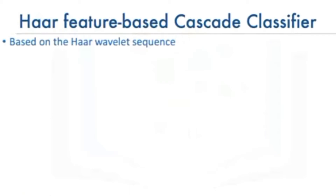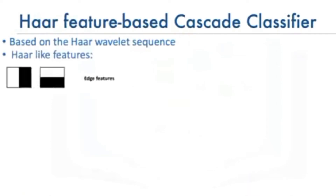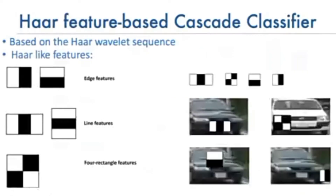After millions of training images are fed into the system, the classifier begins by extracting features from each image. HAR wavelets are convolution kernels used to extract features. HAR wavelets extract information about edges, lines, and diagonal edges. In this example, we overlay the HAR wavelets over the car.